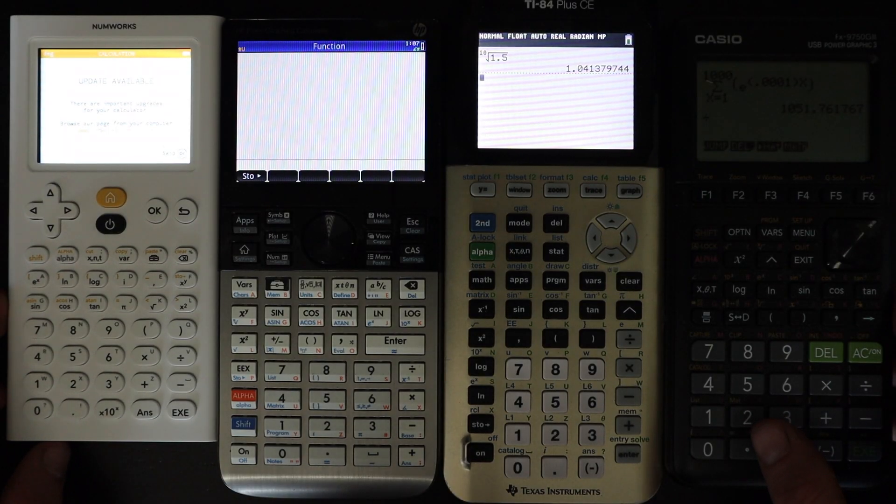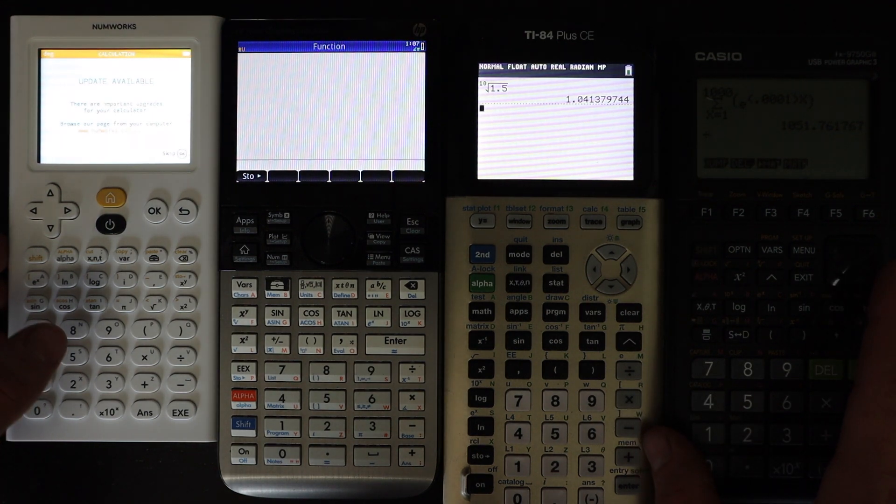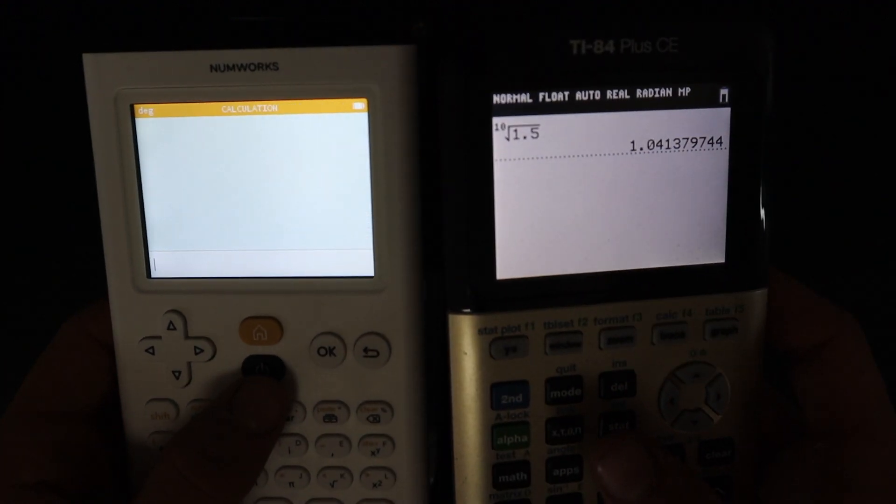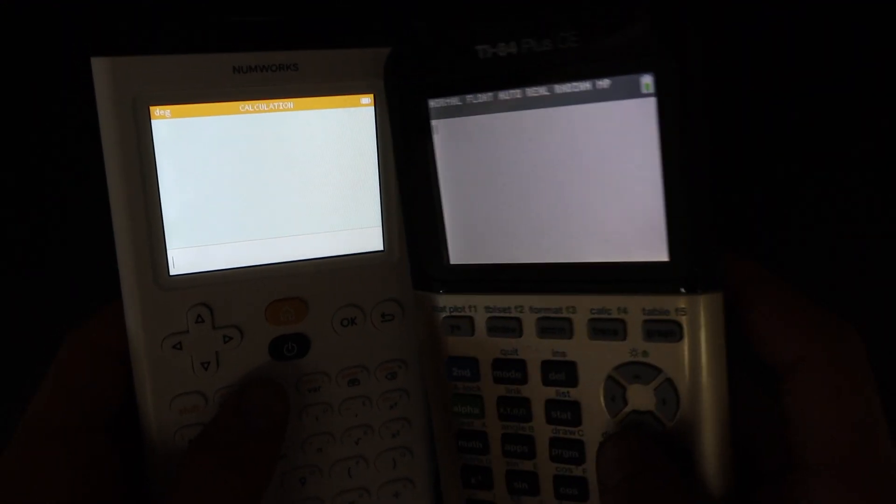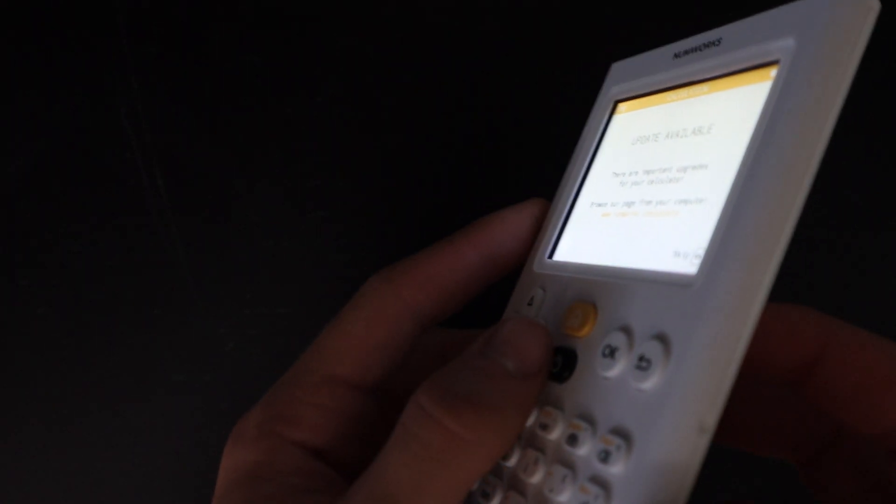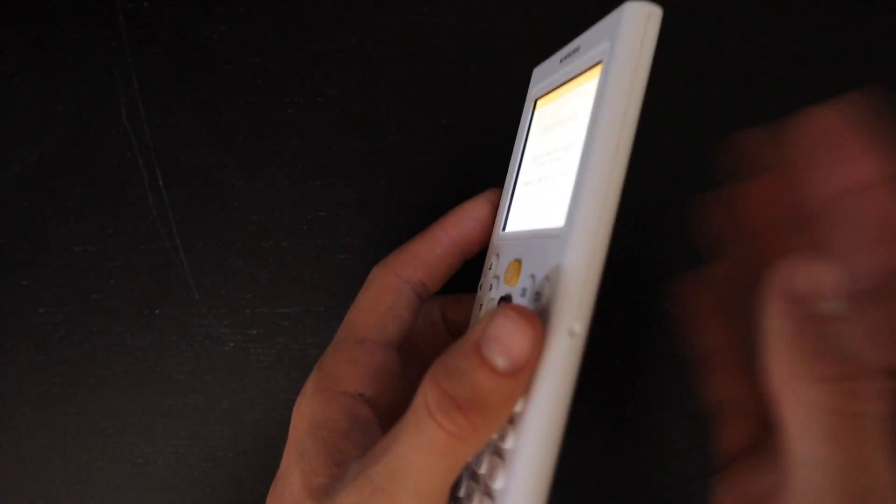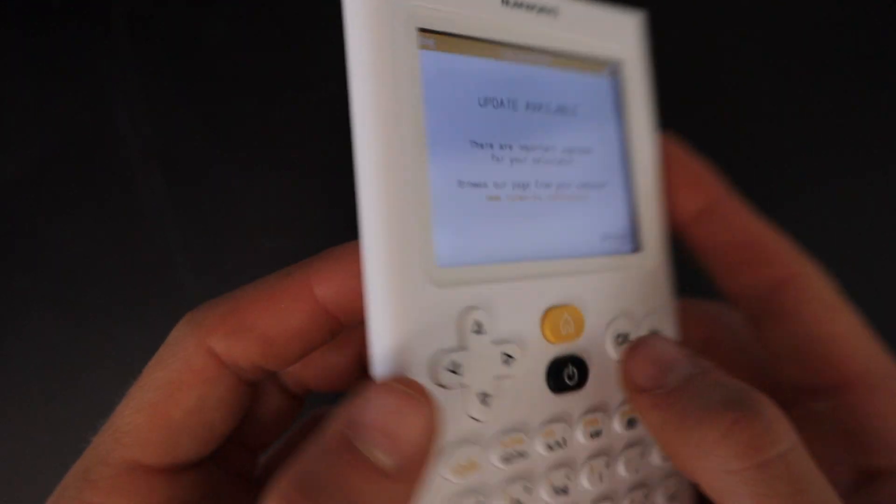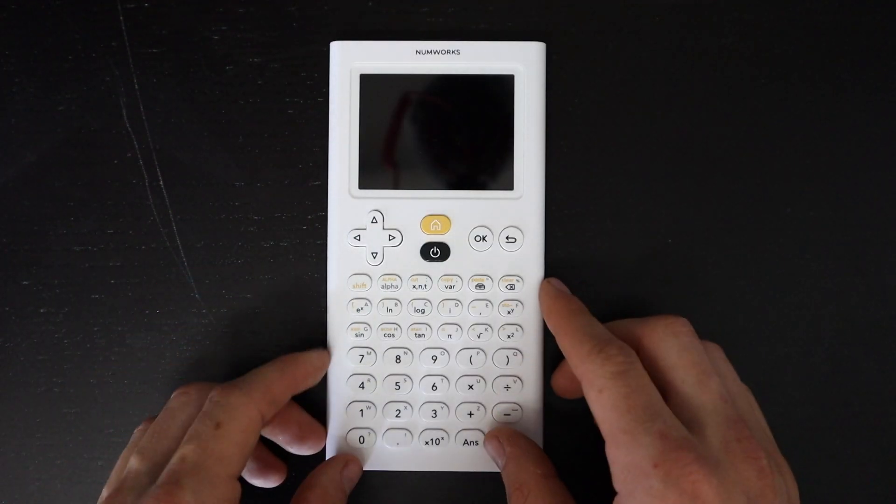You can see here that the NumWorks calculator is quite a bit smaller than pretty much any other graphing calculator you're going to find. Here all of these are turned on so you can see a size comparison with the screens. I'd say the screen size is most similar to the one on the TI-84 Plus CE, although the TI-84 Plus CE is a little bit bigger. You can definitely tell that the screen on the NumWorks is set back into the frame. In the year 2020, that definitely makes it look a little bit more like a dated device.